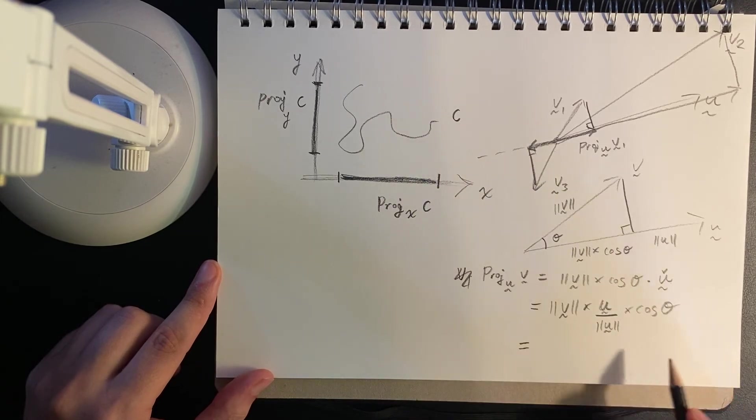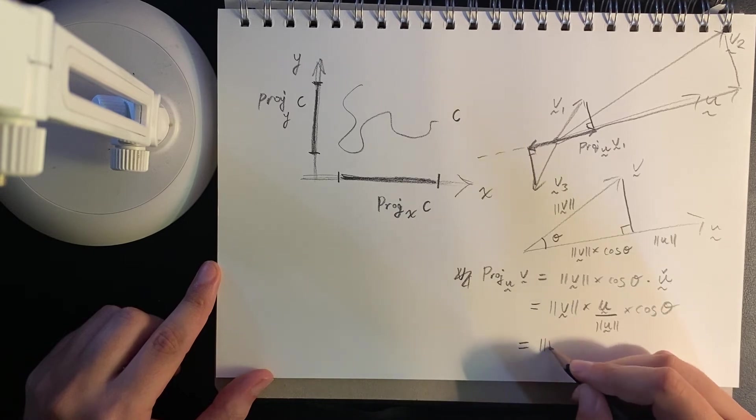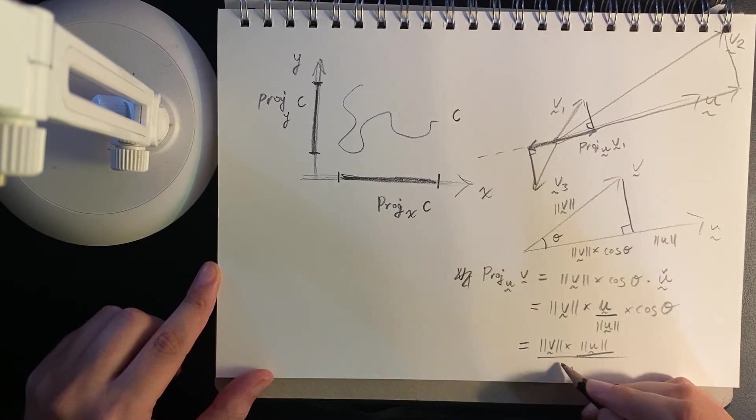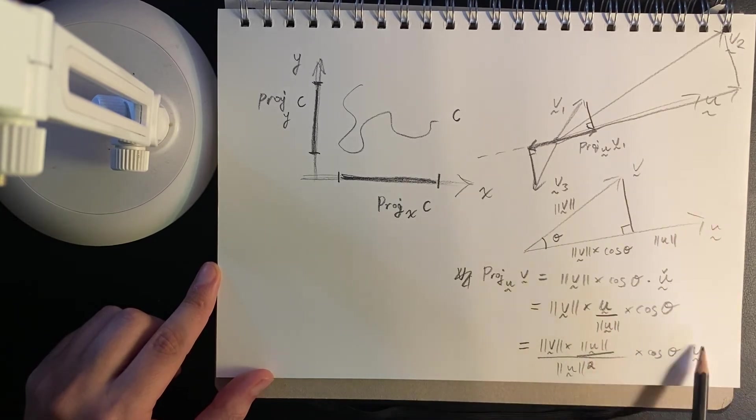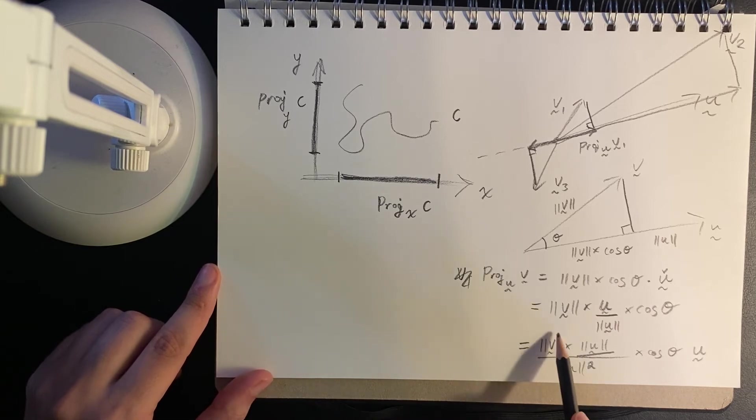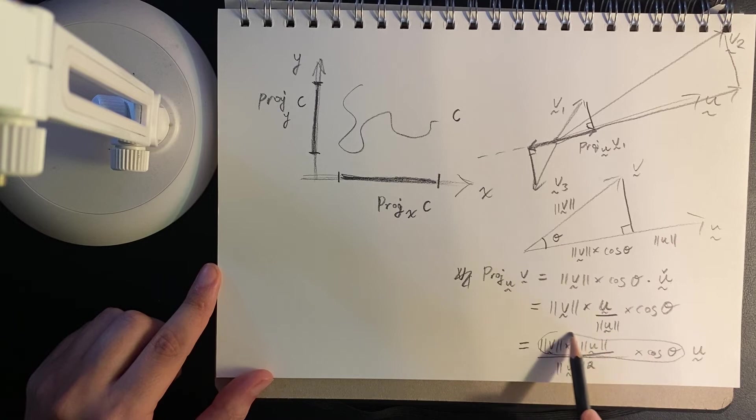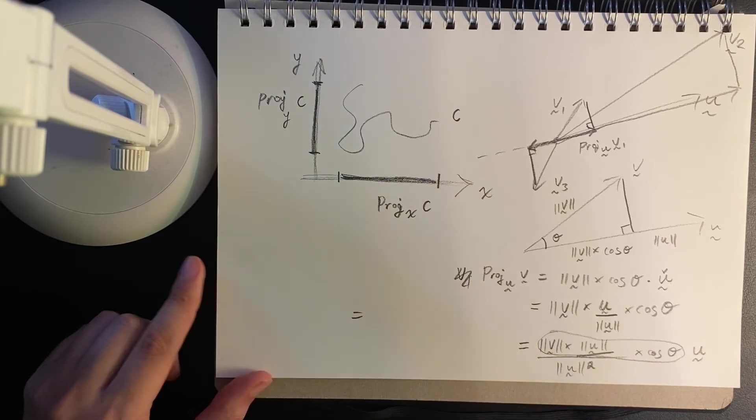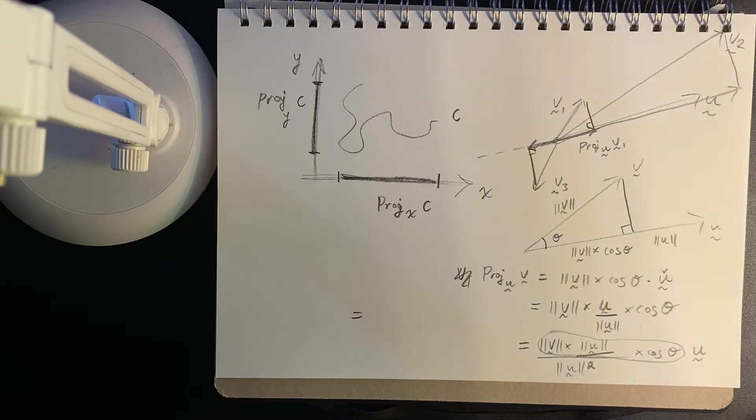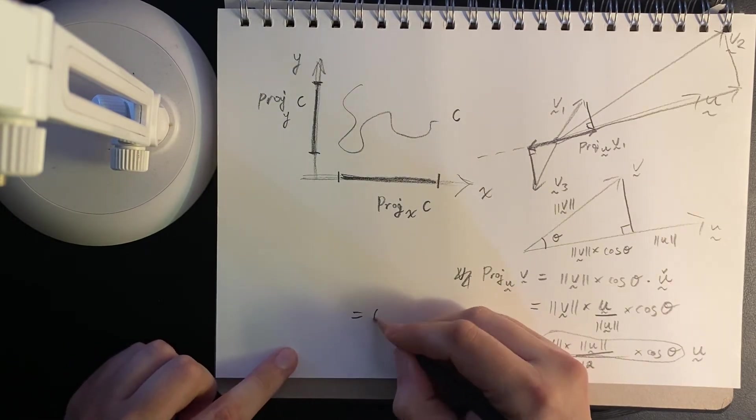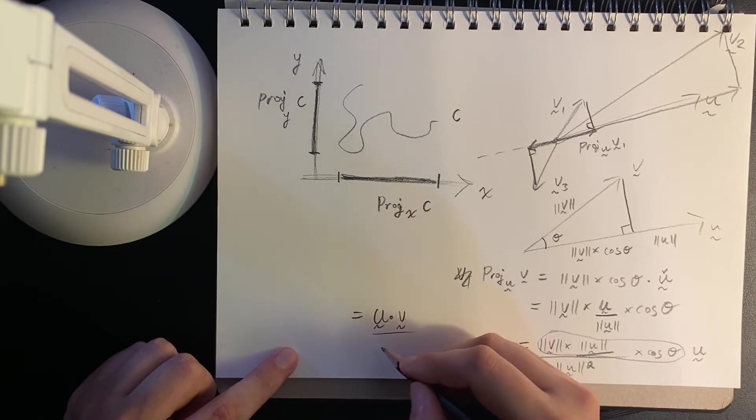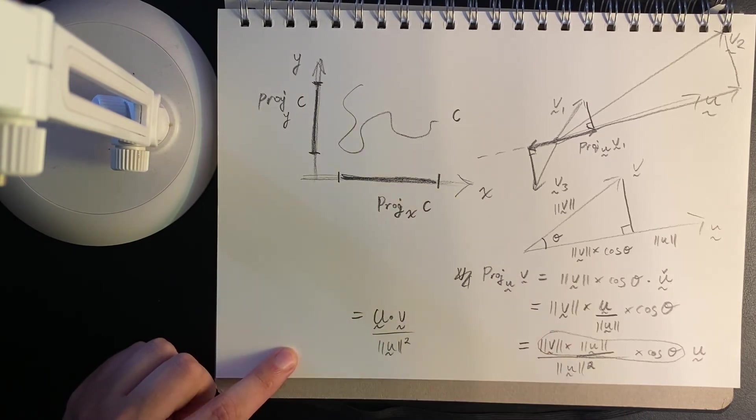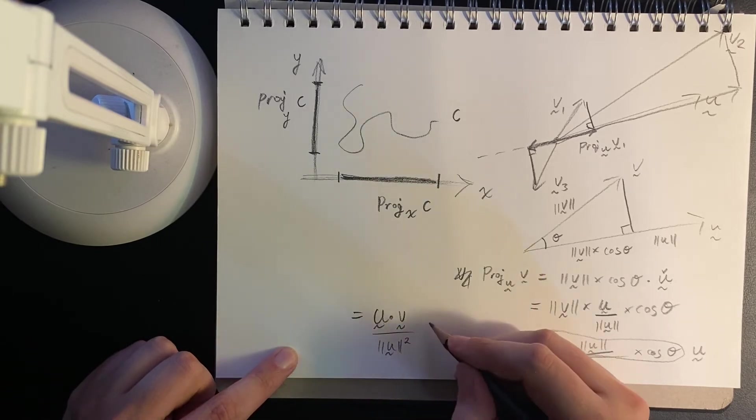And then, well, I'm going to multiply and divide the top by length of u once more. And I'm going to pull that u out. The reason for that is that this part is the dot product. So I'm just filling in space, go over to the other side. This is essentially the dot product of u and v, divide by the length of u squared times the vector u.